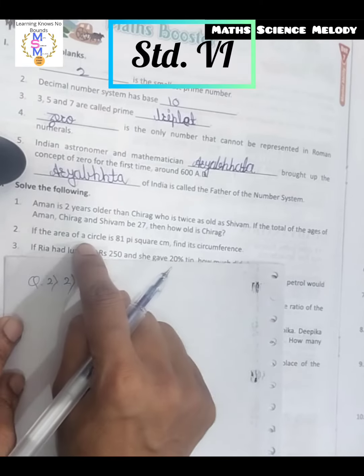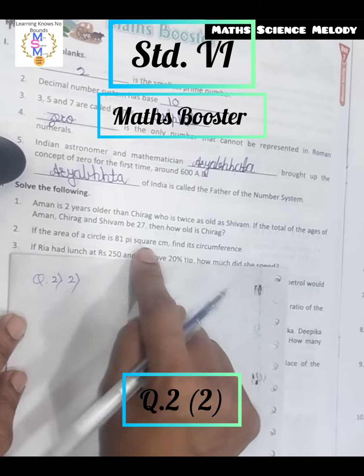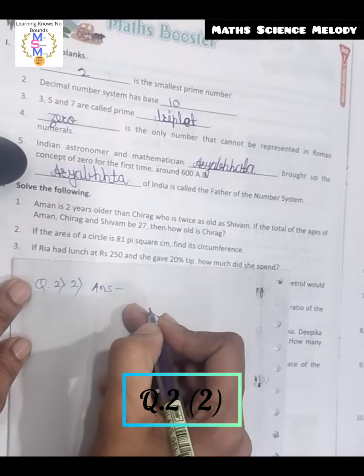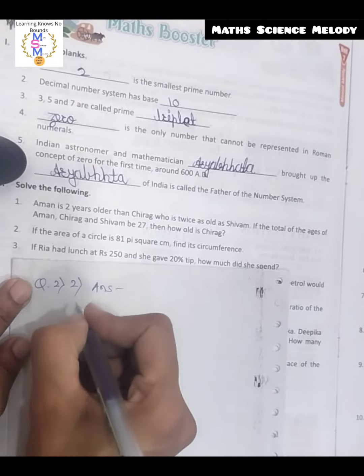Second number: if the area of a circle is 81π square centimeter, then find its circumference. So here, while writing the answer, write down the first formula for area of the circle.